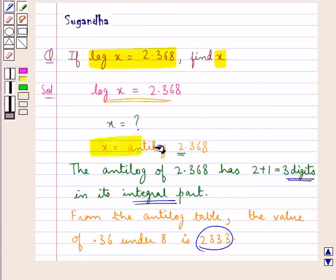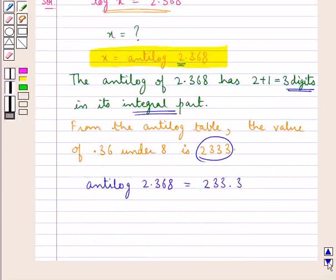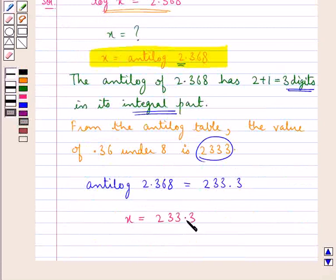Since x equals the antilog of 2.368, we get the value of x as 233.3.